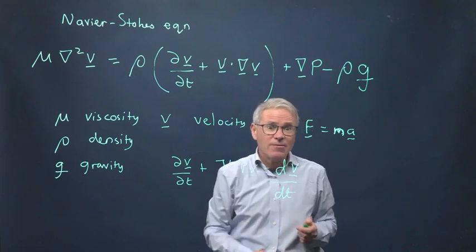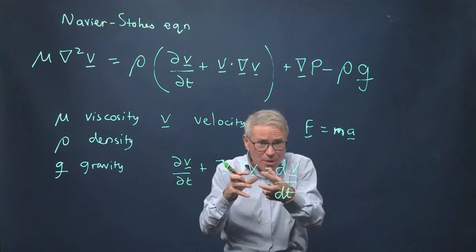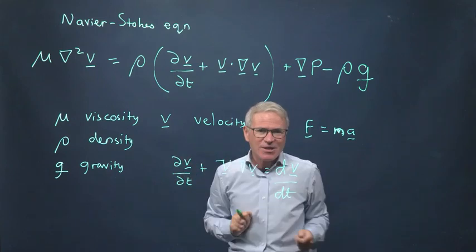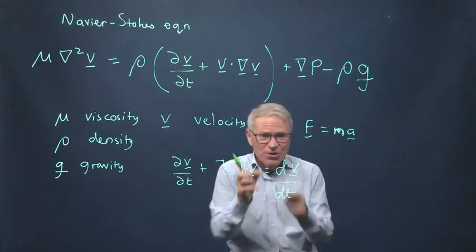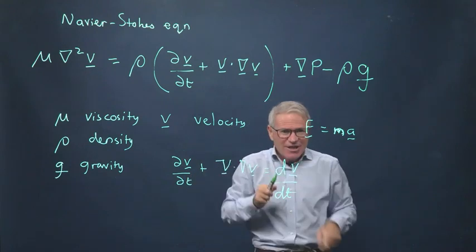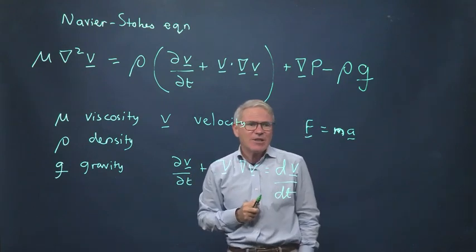So this dv by dt plus v dot grad v is actually what's called the total derivative. It's the total change in velocity due to both movement. So there's different velocity here that moves into where we're looking at and also a change at a fixed point in space. So that's your acceleration.